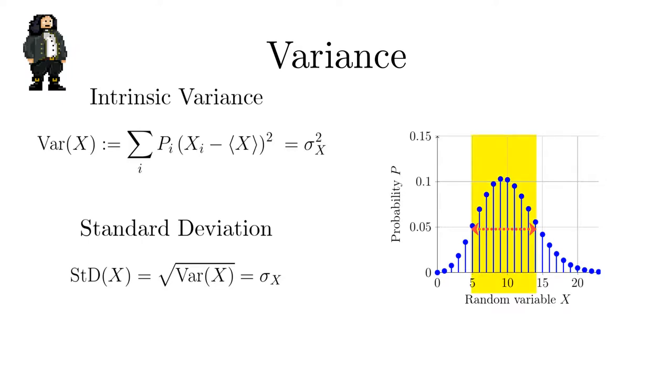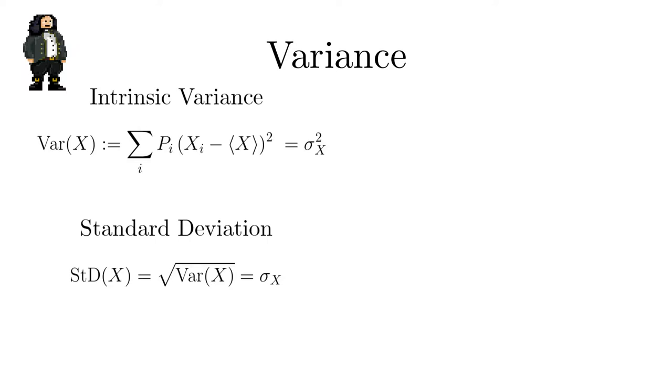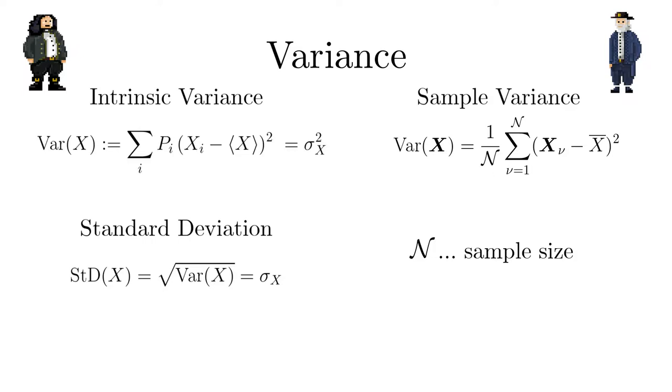Note that not all values of the distribution have to lie inside the so-called one-sigma interval given by the mean value plus or minus the standard deviation. Let us now consider the frequentist approach. Given a sample of size n we can pursue the very same strategy and characterize the width of the sample by the mean squared deviation. The question is how does the sample variance relate to the true variance? There are two things to take into account.